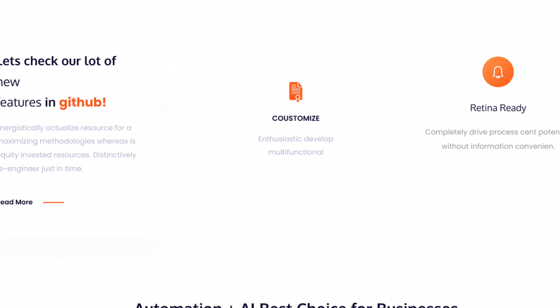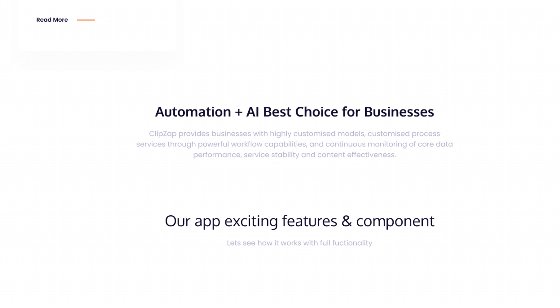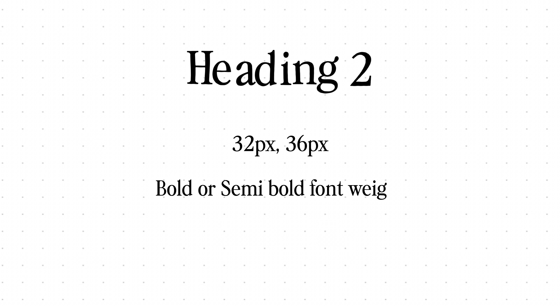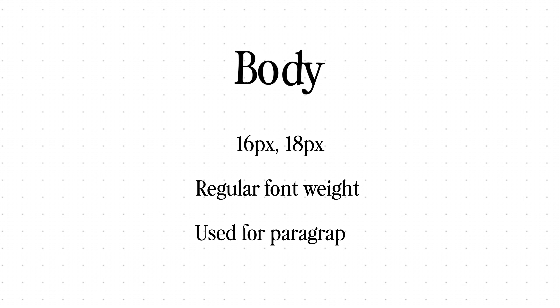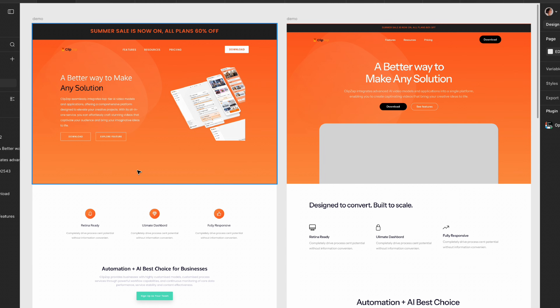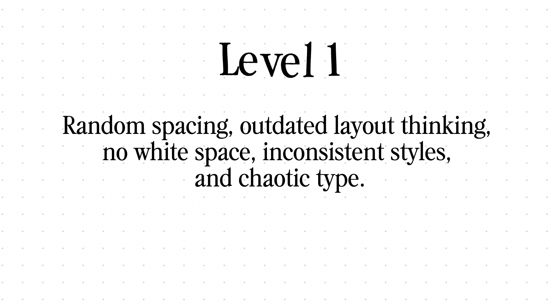Finally for level one, typography. Headings are barely bigger than body text, paragraphs are tiny and painful to read on desktop, and there's no clear system. To fix this, create a simple type scale: H1 large and bold for the main message, H2 medium for section titles, body at around 16–18 pixels for easy reading, and one smaller label size for detail — all using one font family. So that's level one: random spacing, outdated layout thinking, no white space, inconsistent styles, and chaotic type.